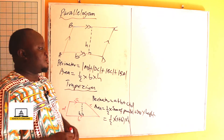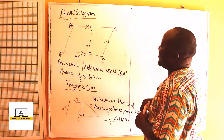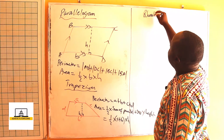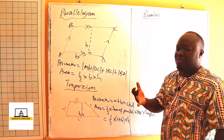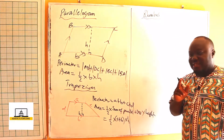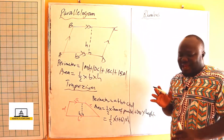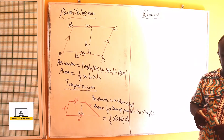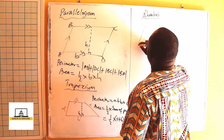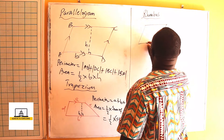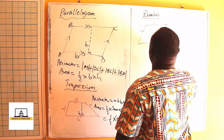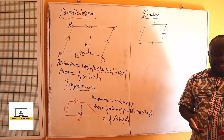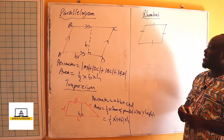Then we move on to a rhombus. A rhombus looks more like a square, but the angles are not right angles — however, the diagonals bisect each other at right angles. A rhombus is a parallelogram with equal sides, and then the opposite angles are equal.